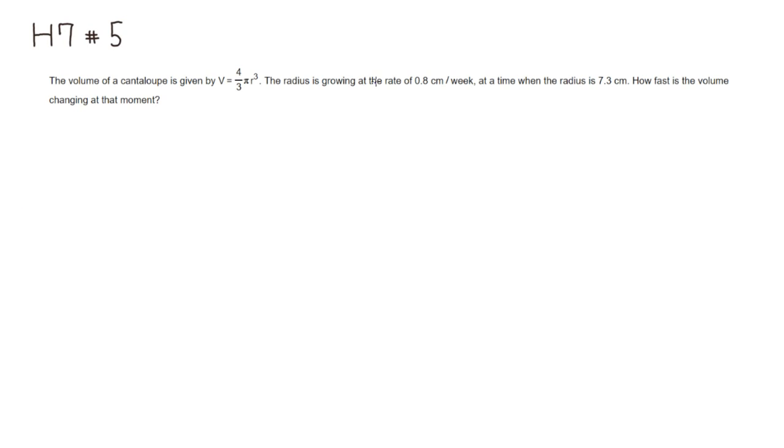So it says the growing at the rate of, so this is the radius, the rate of change of radius. So this is the value of rate of change of radius, dr/dt, with respect to time. And the radius is 7.3, so this is the r value at that point. But we're interested in how fast the volume is changing, so we're looking for dv/dt.